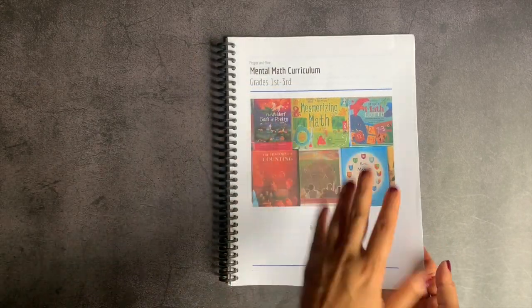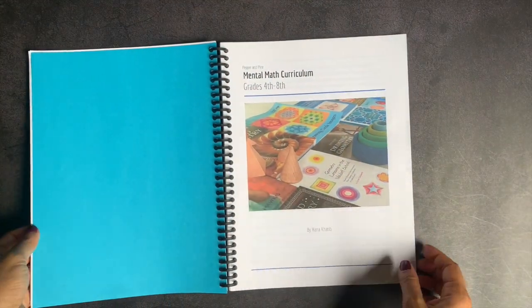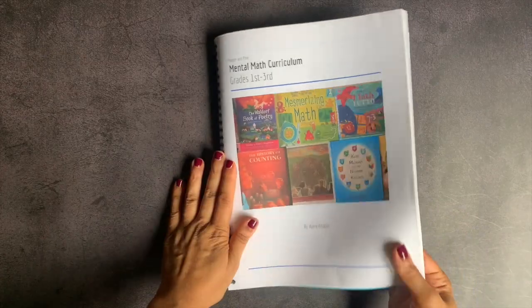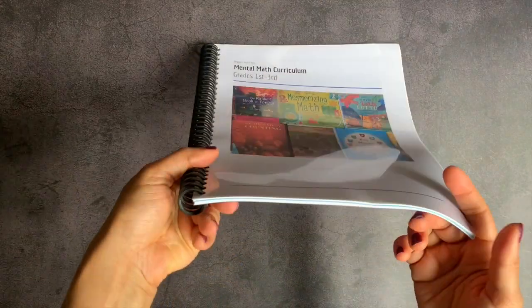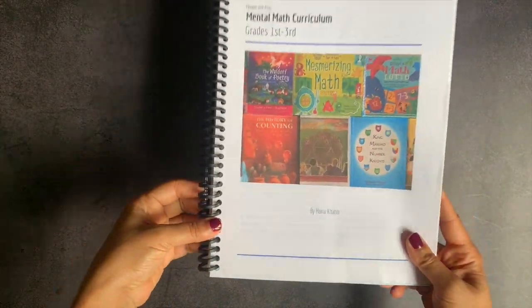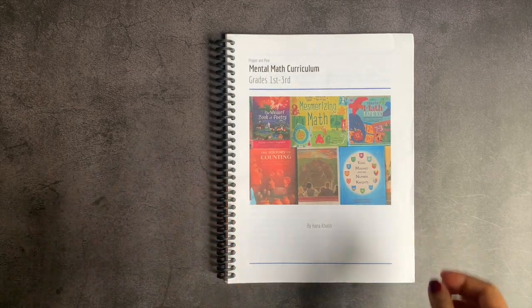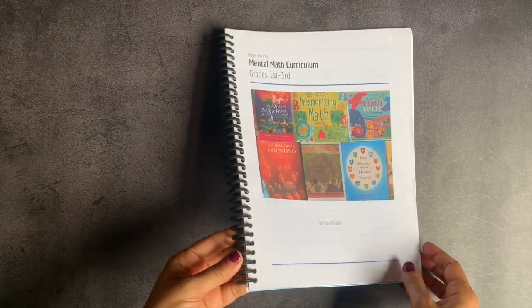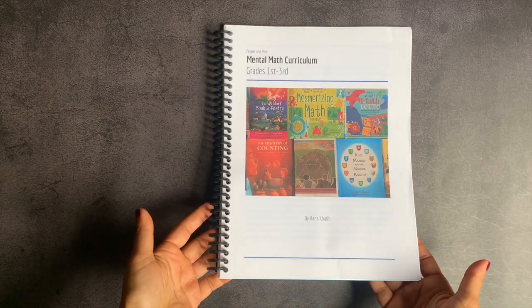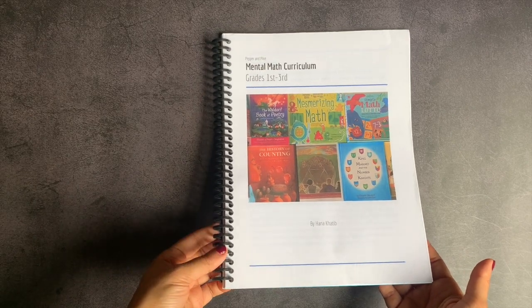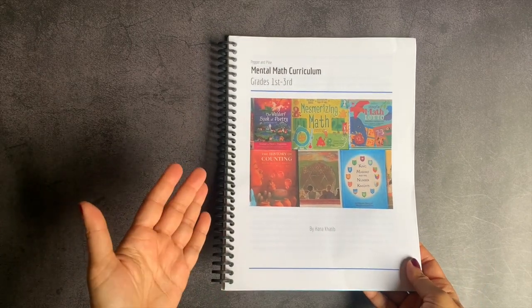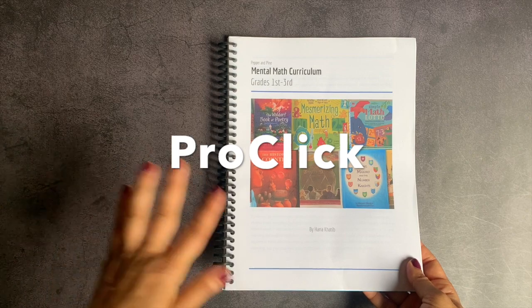She's created a curriculum for grades one through three, as well as four through eighth. Since I have children in both levels, I have bound them together. I probably could have used a smaller binding, but I did not. People do ask me about my binding system all the time. I use the ProClick. I will link it down in the description box below.